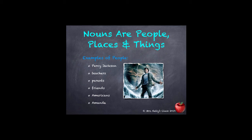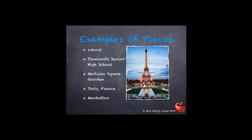Let's talk about some examples. Nouns are people, places, and things. Examples of people: we have Percy Jackson — he's here to the right, and we've been reading about Percy Jackson in class in The Lightning Thief and Sea of Monsters. We also have teachers, parents, friends, Americans, and Amanda. These are all examples of nouns that are people. Specific people, places, or things have capital letters — we'll get into that more in a little bit.